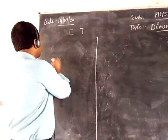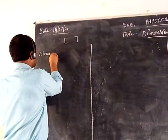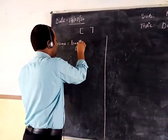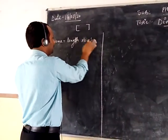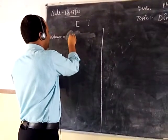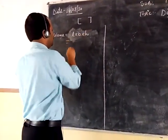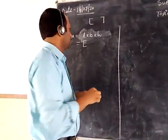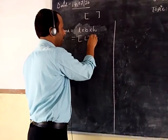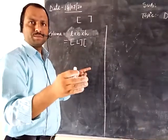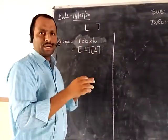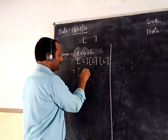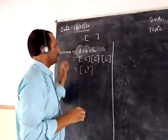I will illustrate this through an example. Suppose volume. Volume is length into breadth into height. The SI unit of length is meter, so it is written in terms of fundamental quantities. The dimension for length is L, for breadth is L, and for height is also L. So the dimension of volume is L to the power 3.